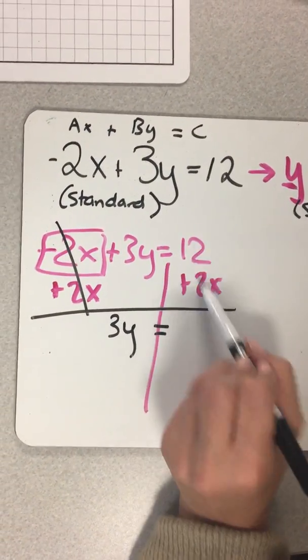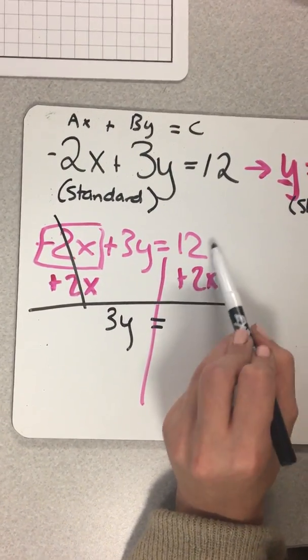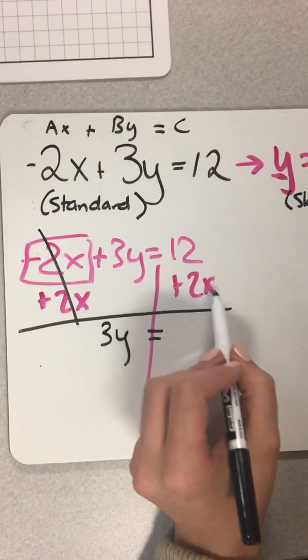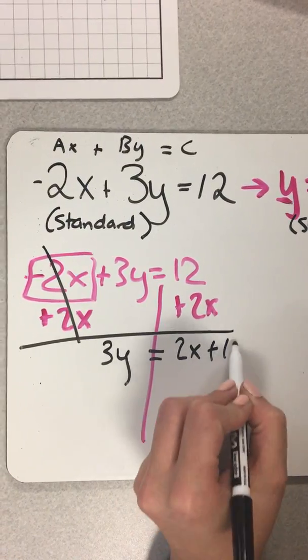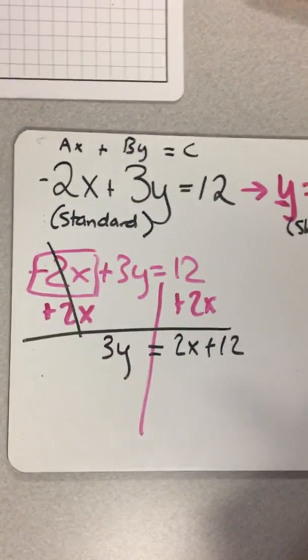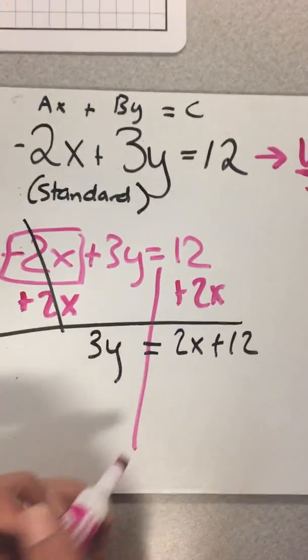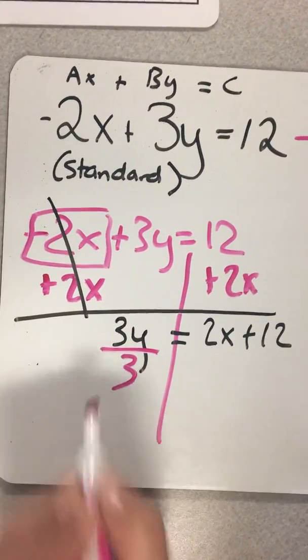And then we cannot add 12 and 2x because the 12 does not have an x with it. So we're left with, I always put the x out front. So we're left with 2x plus 12. Now we still don't have y by itself. We still have to get y by itself. And to do that, we have to divide by 3.